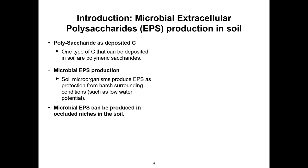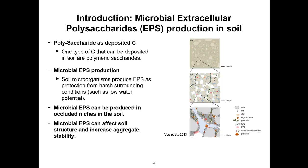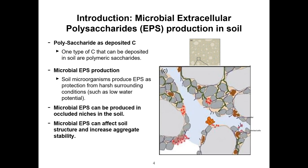For example, in this study they inoculated soil microorganisms onto sand grains and grew them under high water potential and low water potential, and imaged it with cryo-electron microscopy. Under high water potential you can clearly see the microbial cells, but under low water potential you can see a sheath of polymer covering the microbial cells. Later, chemical analysis showed that it was mostly polysaccharides.